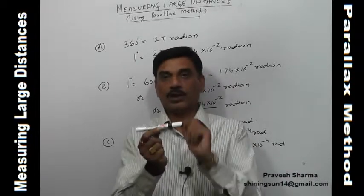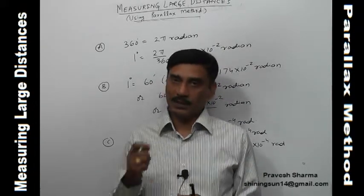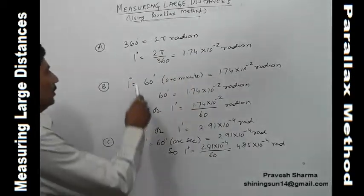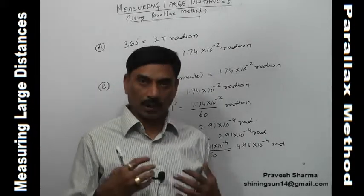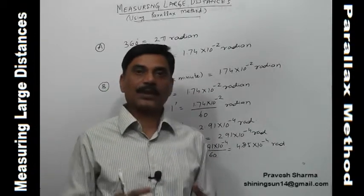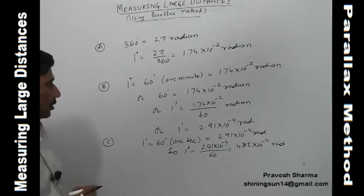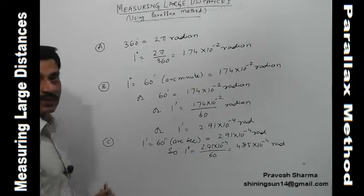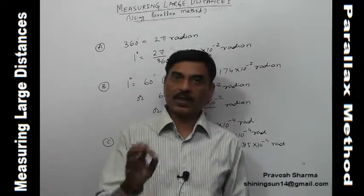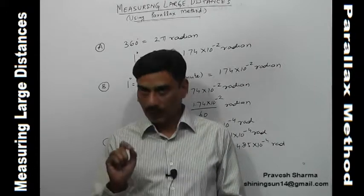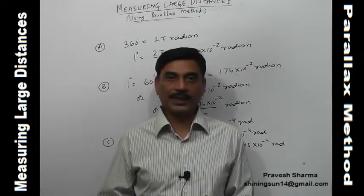Just as one kilometer may be a big unit for small distances, one degree can be a big unit for measuring small angles. So we have smaller units: degrees, arc minutes, and arc seconds. In one degree there are 60 arc minutes, and in one arc minute there are 60 arc seconds.